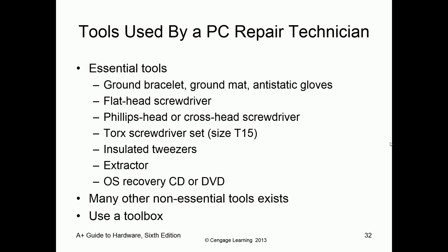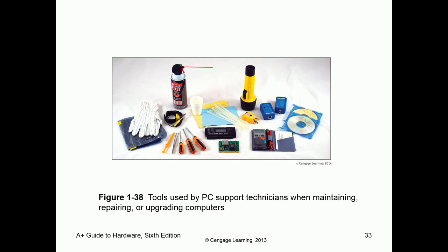The typical tools for computer work include a grounding bracelet, a screwdriver — normally both flathead and Phillips — a torque screwdriver set, tweezers, an extractor, normally some software, and many other non-essential tools. Also normally some form of toolbox, power supply testing equipment, a flashlight, and canned air.